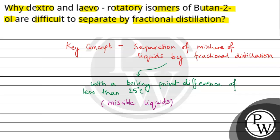We have a compound here, Butan-2-ol. Its structure is like this, with OH here. The chiral center will be this.